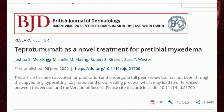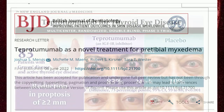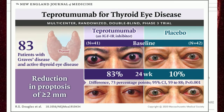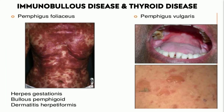A preprint publication from June 2022 explored teprotumumab — an insulin growth factor receptor inhibitor used for thyroid eye disease — as a potential treatment for pretibial myxedema. This was proposed by Josh Mervis, a third-year resident at the University of Miami, based on the overlapping pathophysiology. We also see a variety of immune-bullous disorders in the setting of thyroid disease, so consider thyroid disease when evaluating pemphigus foliaceous, pemphigus vulgaris, pemphigoid gestationis, and bullous pemphigoid.